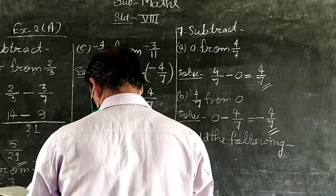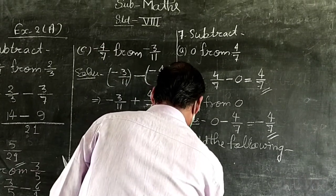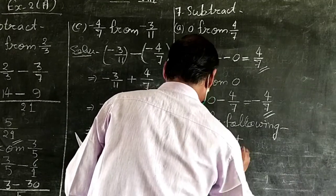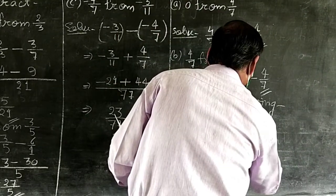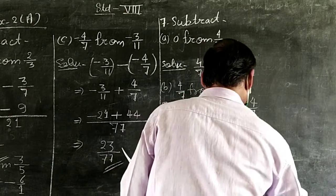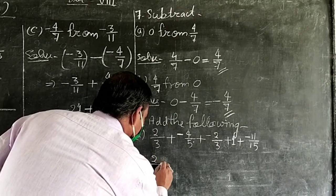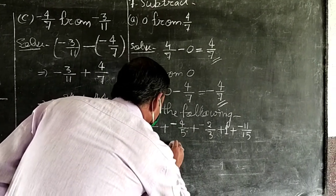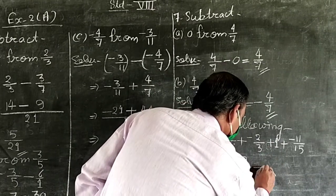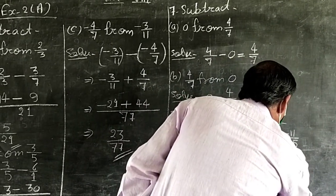Part A: 2 upon 3 plus minus 4 upon 5 plus minus 2 upon 3 plus 1 plus minus 11 upon 15.